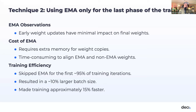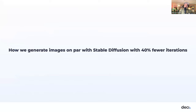Technique two was using exponential moving average (EMA) only for the last phase of training. We found that during early training, initial weight changes don't strongly affect the final outcome. EMA is expensive because it requires storing extra weight data and aligning two sets of weights. Given how long training takes, it's not worth using EMA for the majority of early training steps. By not using EMA early on, we were able to handle bigger data batches and speed up training by about 15%.